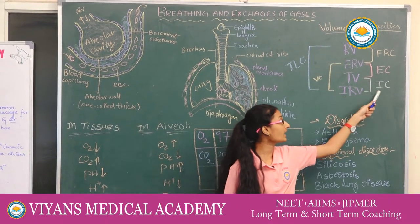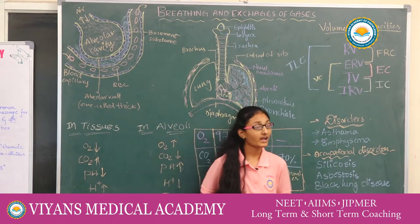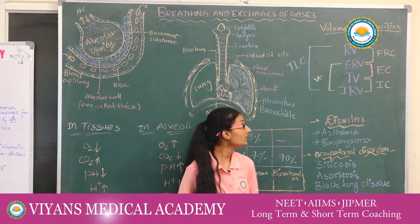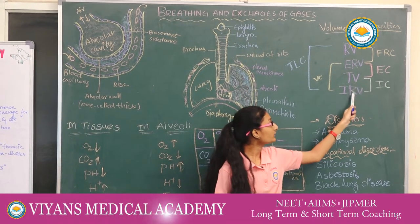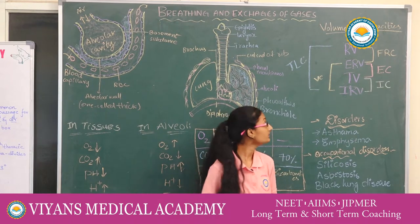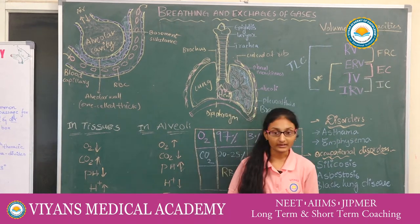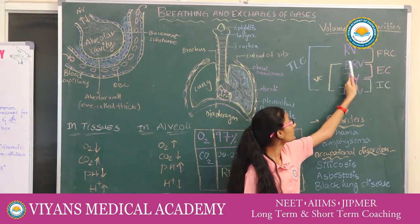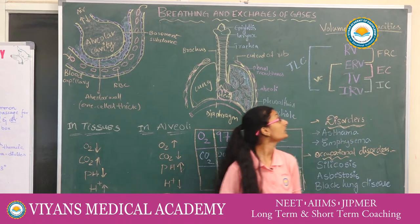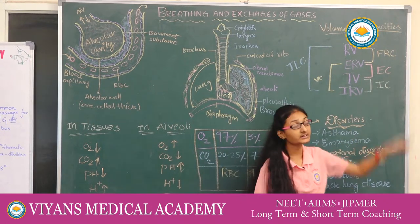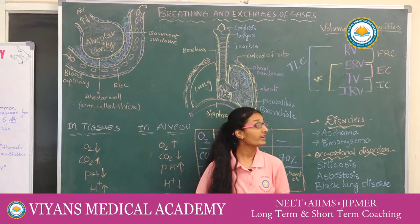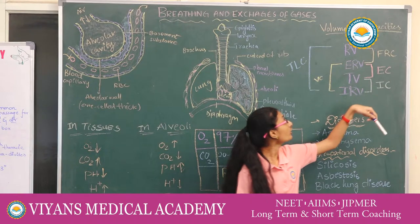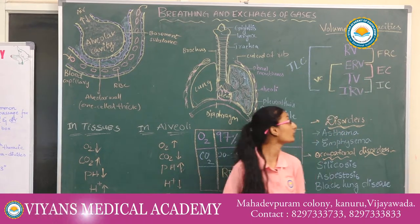We can derive the lung capacities. IC (Inspiratory Capacity): the volume of air inspired, obtained by adding TV and IRV. Expiratory Capacity (EC): obtained by adding ERV and TV. Functional Residual Volume (FRC): the volume of air remaining after normal expiration, obtained by adding RV and ERV.